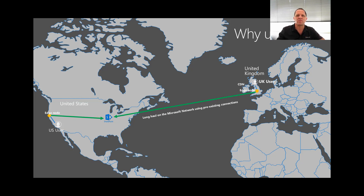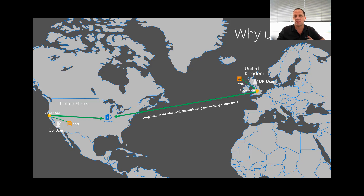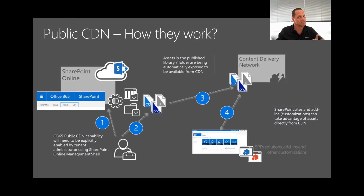Now what happens if we implement CDNs? Instead of the file coming all the way back, the CDN is in multiple locations around the world — in fact in most cities around the world. As you can see in the top right, the CDN would feed directly to the user. That means less traffic flow along the line, less delay getting back to the user, and we see quite a significant improvement in speed. Even for the US user, being served from a CDN close to their location is a lot faster.